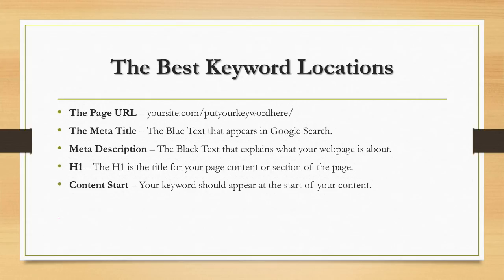The first of those is the page URL — your actual website address. So whatever your website name is — in this example I've got yoursite.com — it's what will go after the forward slash. The actual page title in the URL should contain your keyword, which is why in the example I've put 'your keyword here' as the page title. The next is the meta title, which is the blue text that appears in Google search.